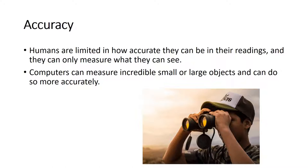Accuracy. Humans are limited in how accurate they can be in their readings, and they can only measure what they can see. Computers can measure incredibly small or large objects and can do so more accurately.